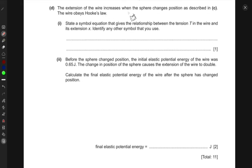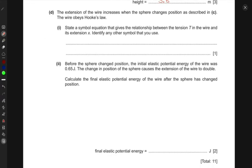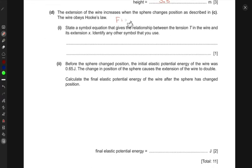Next, the extension of the wire increases when the sphere changes position as described in part C. The wire obeys Hooke's law. State a symbol equation that gives the relationship between tension T in the wire and the extension X. Identify any other symbol that we use. Now we know Hooke's law states that the force is directly proportional to the displacement. F is equal to K times X.